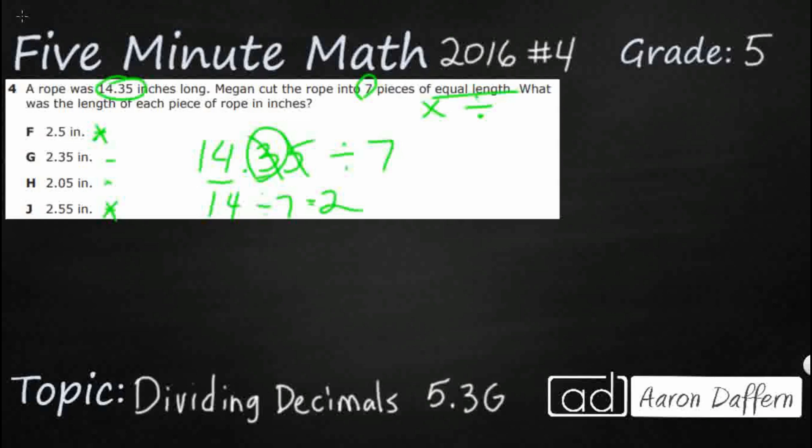So if we were to draw a strip diagram of the whole thing here, we can say this is 14.35. We need 7 equal units here. And we could add 2 seven times and that is going to get us 14. So that would just leave us with this .35. So we need to add something 7 times to get to that .35.